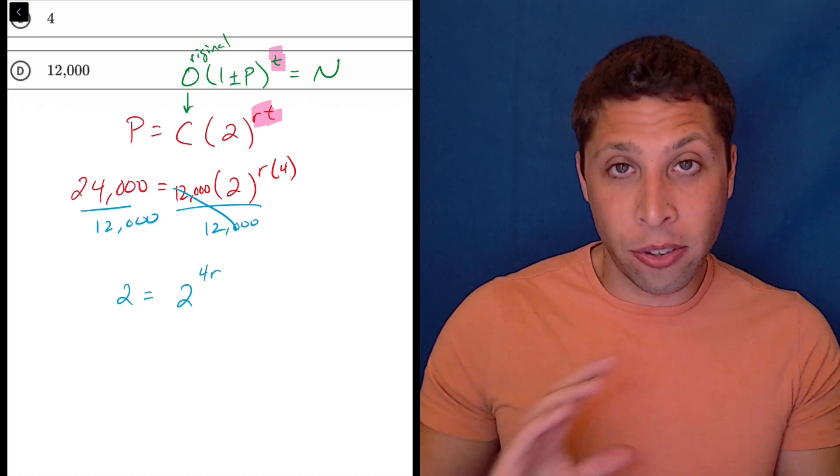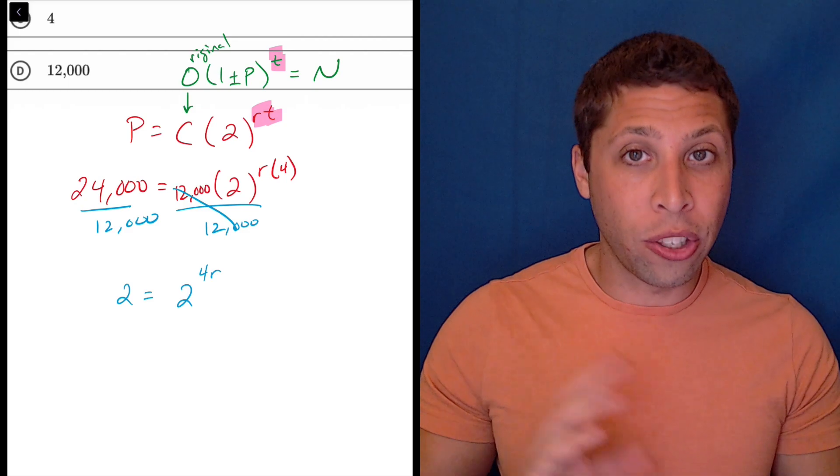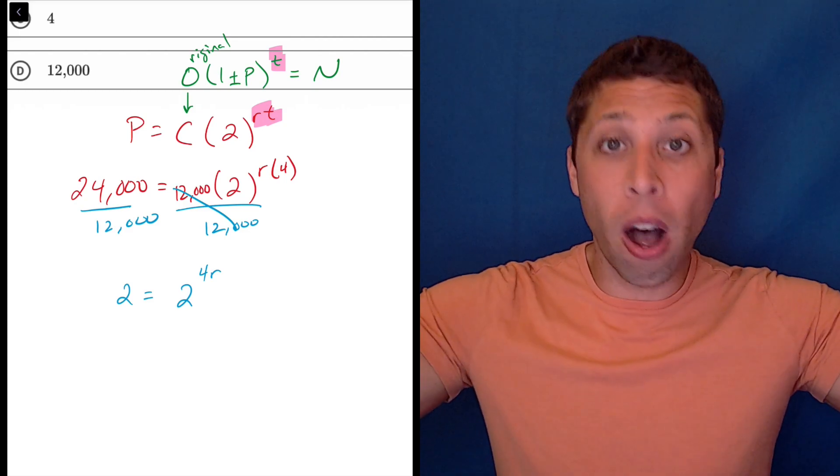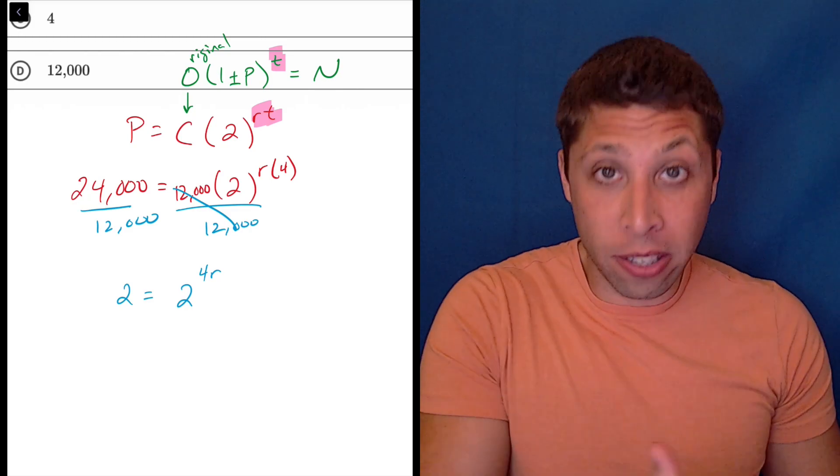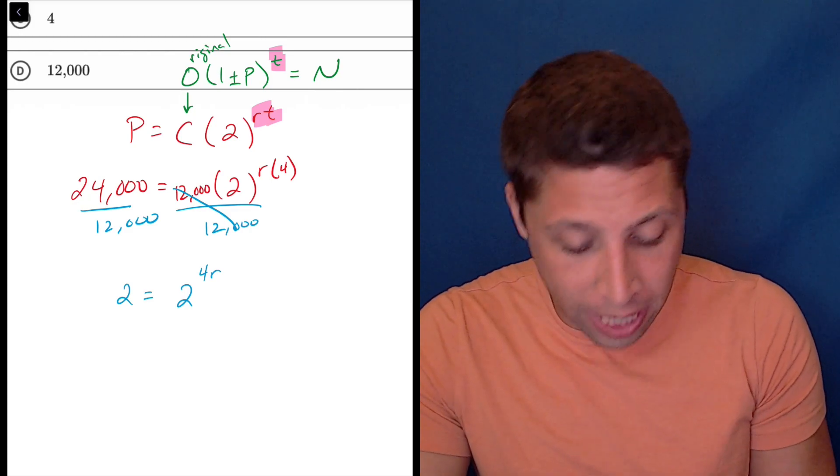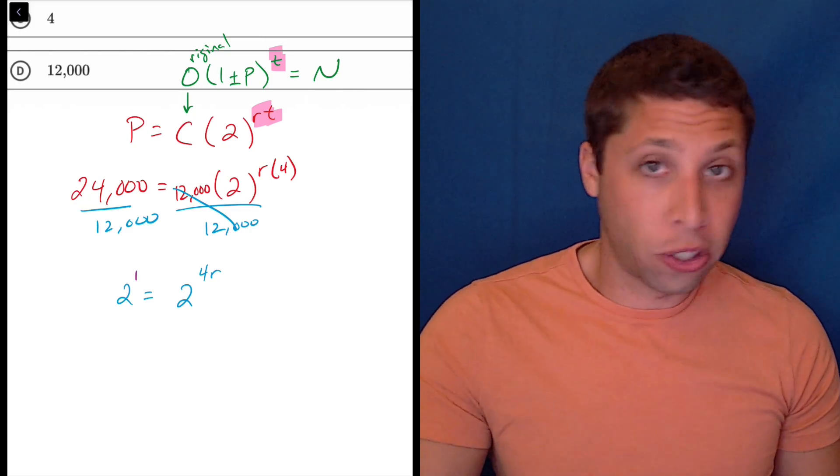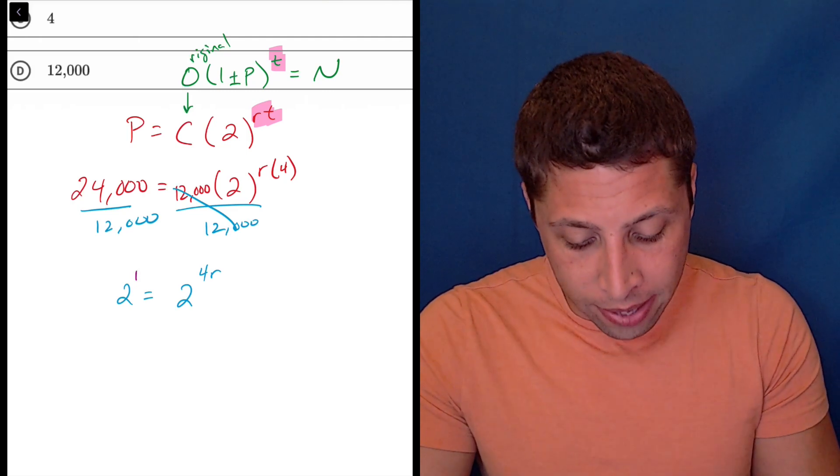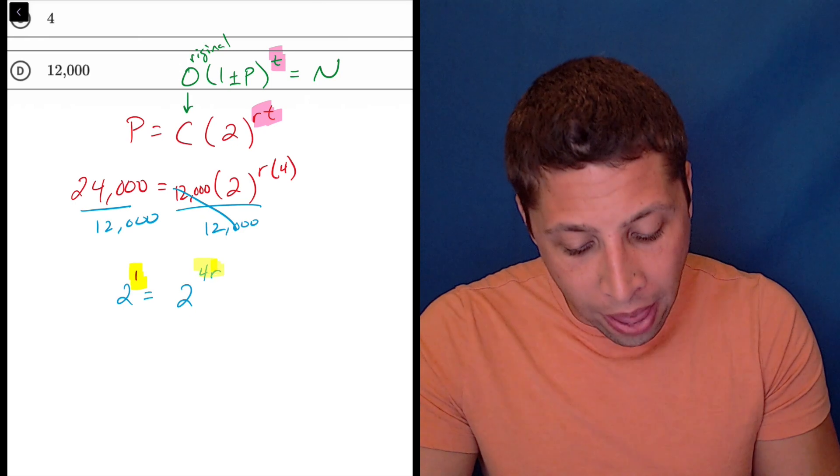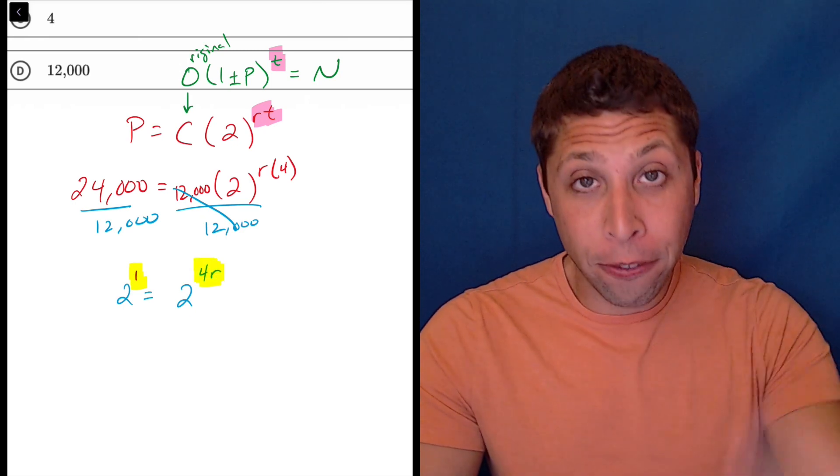Now, since the bases are the same—we've got 2 on both sides—we just say, okay, the exponents on those 2s are also the same. 4R is clearly one of those exponents, but what's the exponent on the left side? Well, if it's just 2, then it's 2 to the 1st. So really all I care about now is that this 1 and this 4R have to be the same thing.